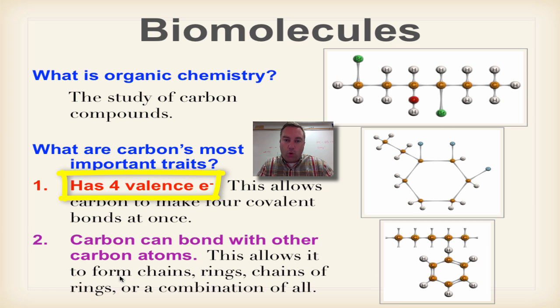Well, number one is it has four valence electrons. This means that carbon can join with four other atoms, including itself. Now, when carbon can bond with other carbon atoms, it can form these great shapes.